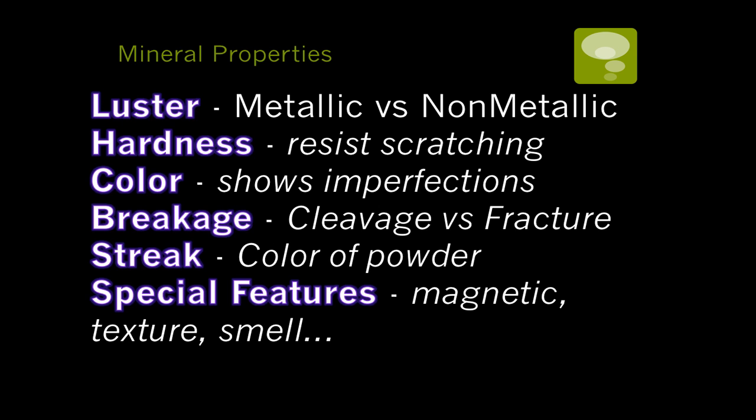In order to identify a mineral, we use six basic properties: luster, hardness, color, breakage, streak, and any special features of the mineral. Let's look at them in more detail.